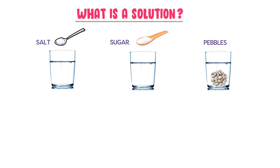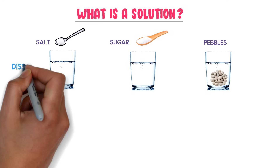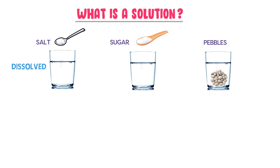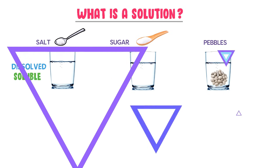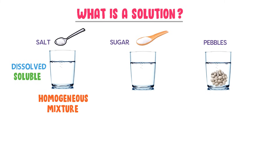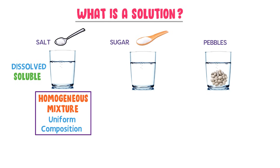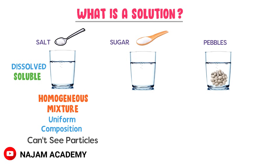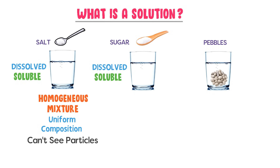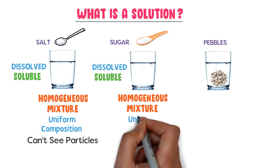After some time, I observe that salt is completely dissolved in the water. So we say that salt is soluble in water and forms a homogeneous mixture or uniform composition. I also observe that sugar is also completely dissolved in the water, so sugar is soluble in the water and forms a homogeneous mixture or uniform composition.